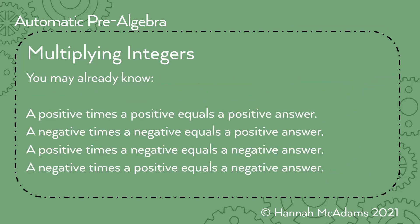You may already know this, and if you don't, no worries — we're going to go over it today. A positive number times a positive number equals a positive number. That everybody knows because we've been multiplying positive numbers since about the third grade. A negative times a negative equals a positive number — that one might be new. A positive times a negative equals a negative, and a negative times a positive equals a negative.